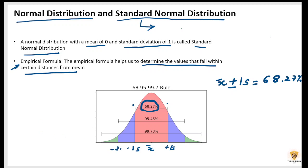This is minus 2s, this is plus 2s. So x-bar plus minus 2s will contain 95.45% of the values.